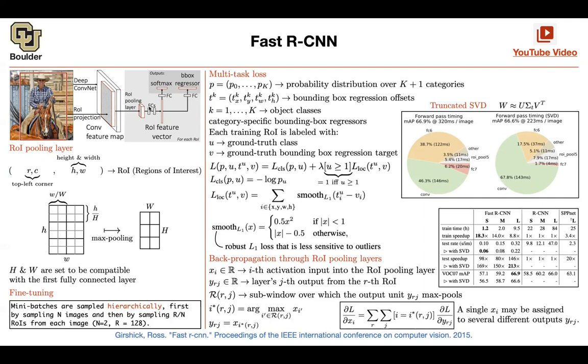You're going to have some fully connected layers that are giving you the softmax and the bounding box regressor. This fully connected layer here is going to have a deterministic or a pre-specified input size. So it's going to only accept vectors of a particular size.